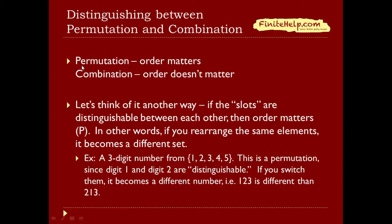Permutation is when order matters, and combination is when order doesn't matter. Another way to think about it: ask whether the slots are distinguishable from each other. If they are, then order matters — it's a permutation. In other words, if you rearrange the same elements, it becomes a different set. For example, a three-digit number from the digits 1, 2, 3, 4, 5 is a permutation, because digit 1 and digit 2 are distinguishable.